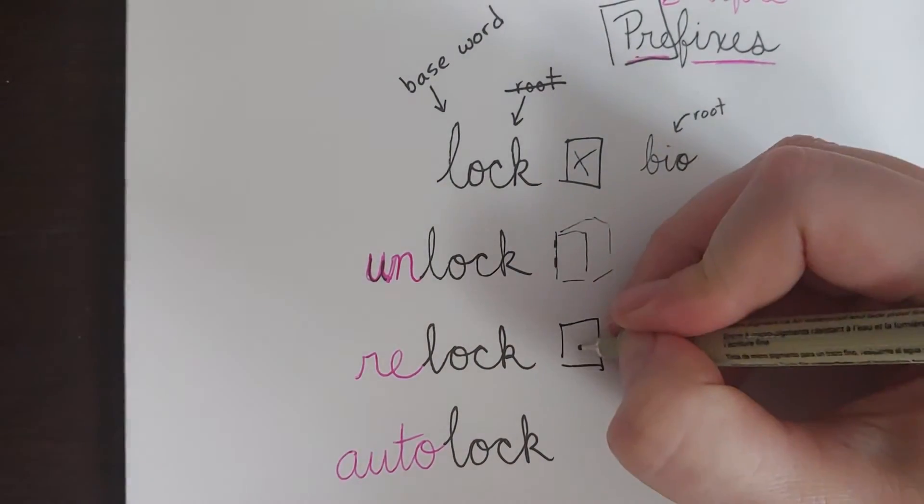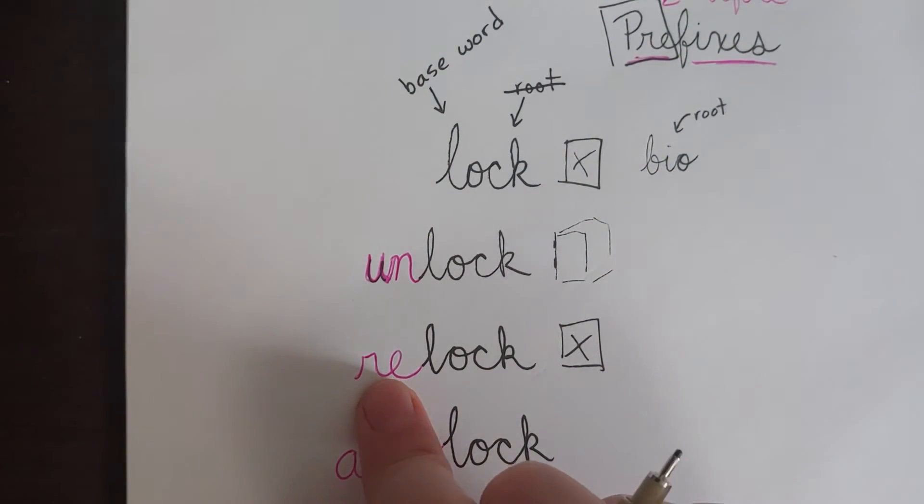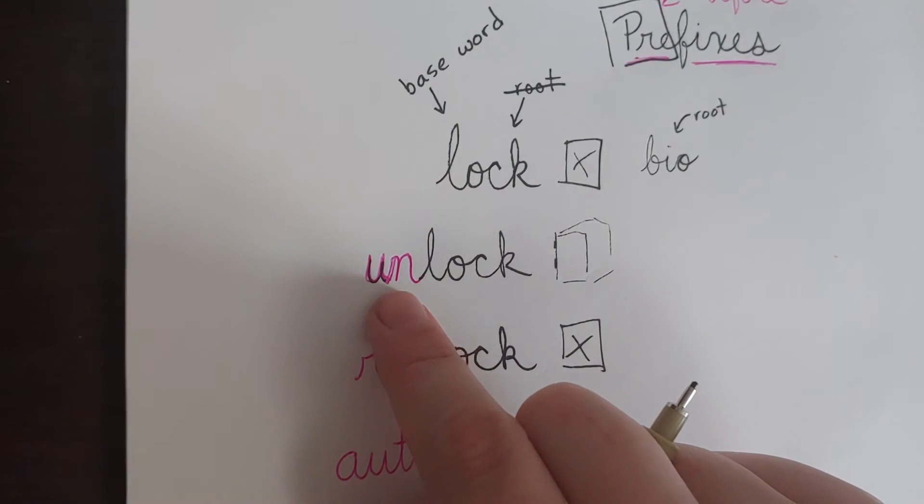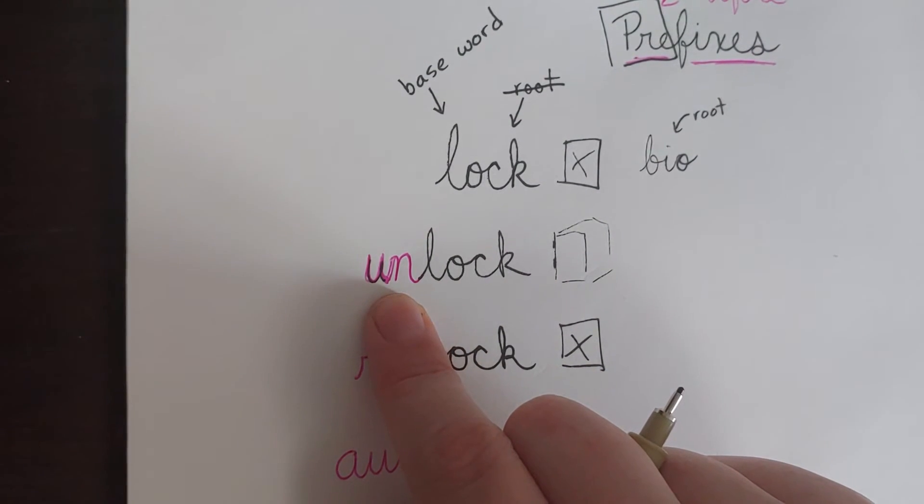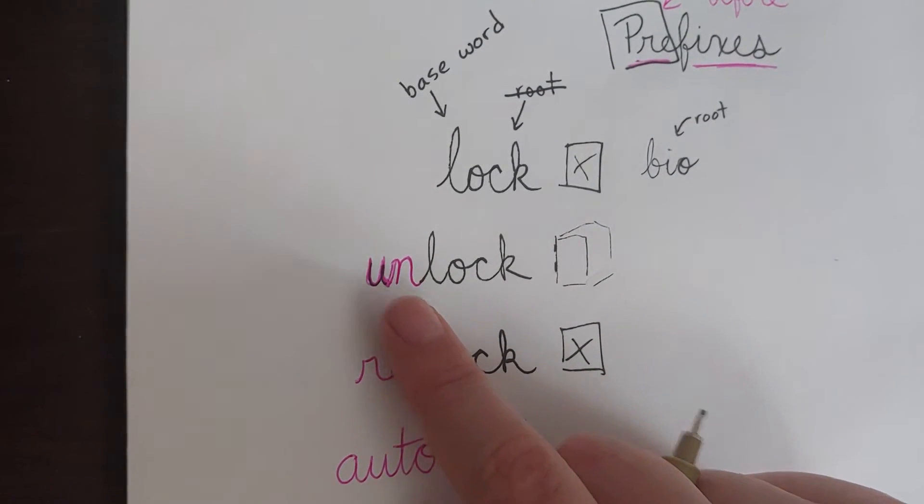That would mean to go back to it and lock it again. The prefix re means to do again. The prefix un means to take away the thing that has already happened. It means like do the opposite of.